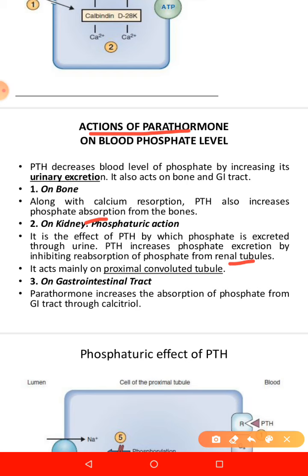Calcitonin is different from PTH in this regard. On the gastrointestinal tract, parathormone increases the absorption of phosphate from the GI tract through calcitriol.